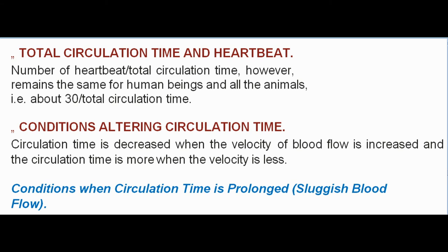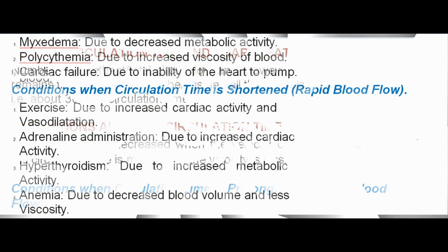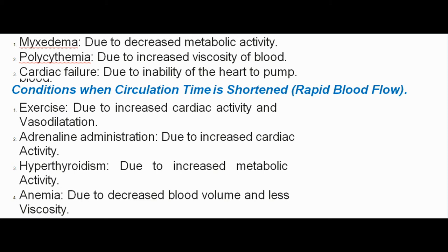Conditions altering circulation time: Circulation time is decreased when velocity of blood flow is increased, and prolonged when velocity is less. Conditions when circulation time is prolonged (sluggish blood flow): Myxedema — due to decreased metabolic activity; Polycythemia — due to increased viscosity of blood; Cardiac failure — due to inability of the heart to pump. Conditions when circulation time is shortened (rapid blood flow): Exercise — due to increased cardiac activity and vasodilatation; Adrenaline administration — due to increased cardiac activity; Hyperthyroidism — due to increased metabolic activity; Anemia — due to decreased blood volume and less viscosity; Decrease in peripheral resistance — due to vasodilatation.